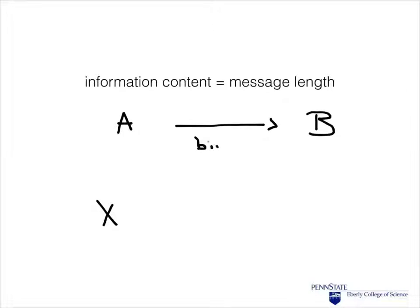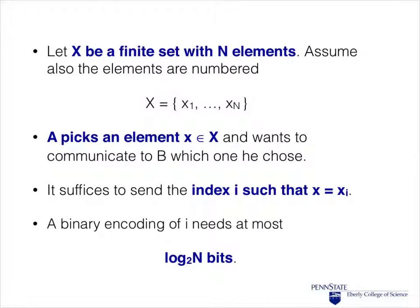The basic setup that we will be dealing with is a person A trying to transmit some information, X, to a receiver, B. And we assume that this information is usually transmitted electronically, through a binary channel. Let's first look at a very simple example. We start with a finite set with n elements.